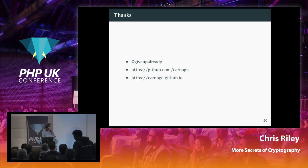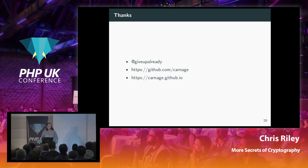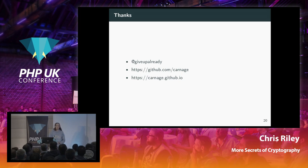The speaker closed by sharing contact details: Twitter, GitHub with various projects, and a blog where the slides for this and other talks are posted. They also promoted PHP Yorkshire, an upcoming event on 13th April, with approximately 15 early-bird tickets remaining and a discount code PHPUK2019 for a further £6 off.